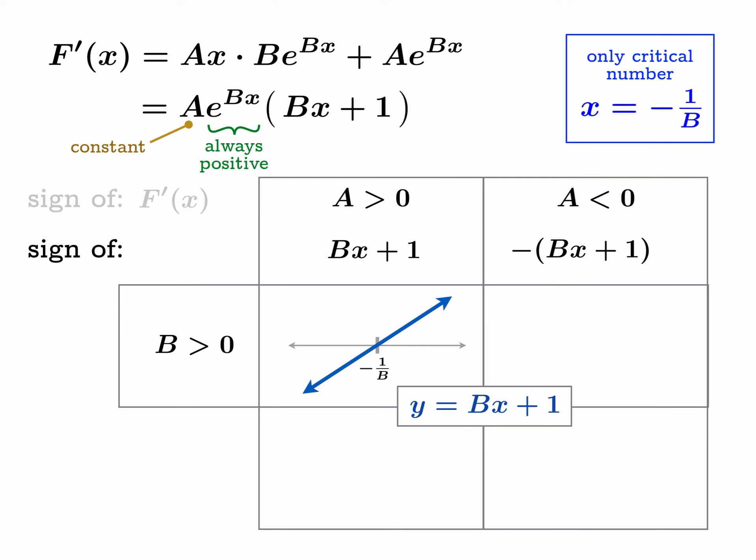If B is less than one, then the slope is negative, so we're going to flip the graph, but it still has the same zero. In the right-hand column where we've assumed A is less than zero, we're interested in the sign of the opposite of Bx + 1. The graphs are going to be flipped across the horizontal axis. All of these linear functions have negative one over B as the sole root.